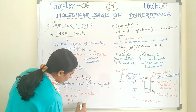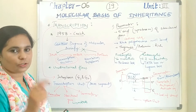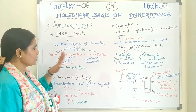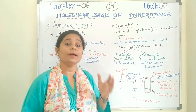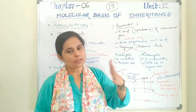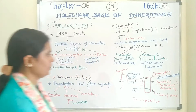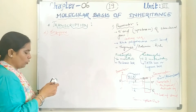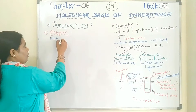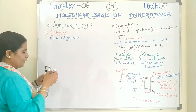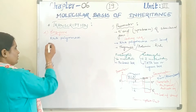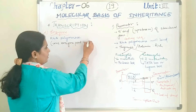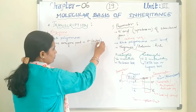We need mRNA for protein synthesis. Please take a screenshot. Next, we talk about the enzymes required for transcription. The enzyme that acts here is RNA polymerase. RNA polymerase enzyme has two parts: the core enzyme, plus it requires a sigma factor to form the complete holoenzyme.